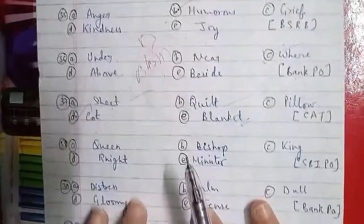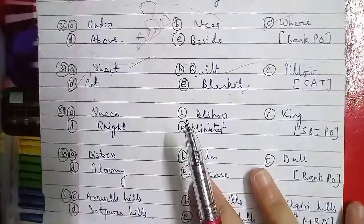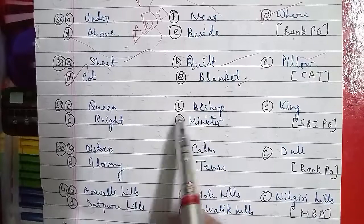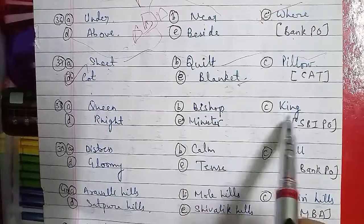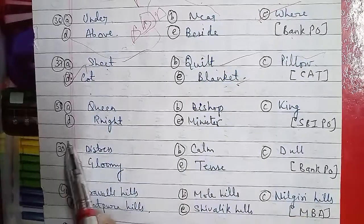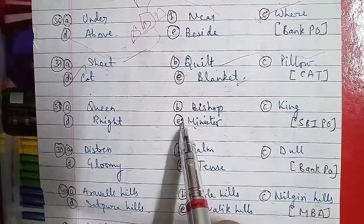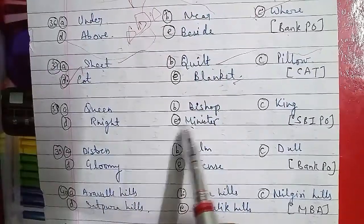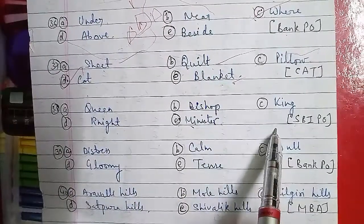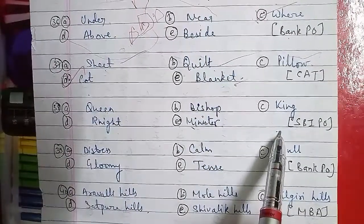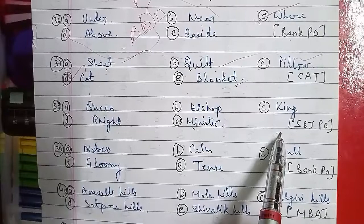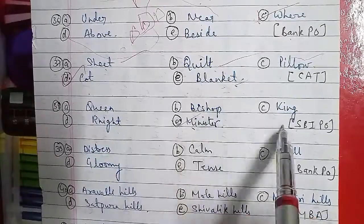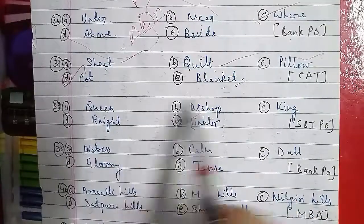Question number 38: Option A is Queen, B is Bishop, C is King, D is Knight, and E is Minister. King, Queen, Bishop, and Knight are all chess pieces. Minister is not a chess piece, so Minister is the odd one out.